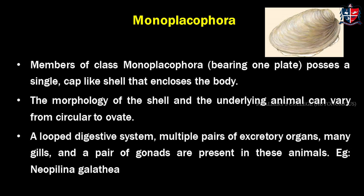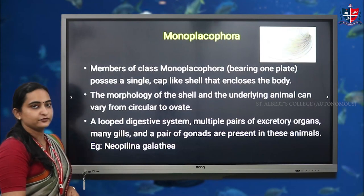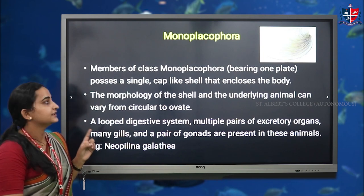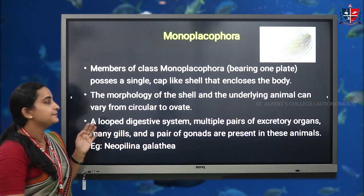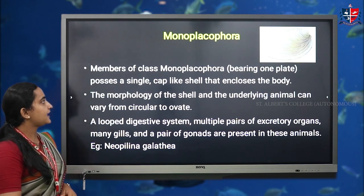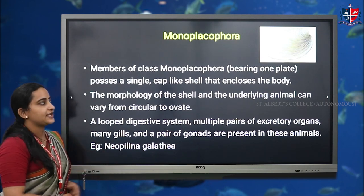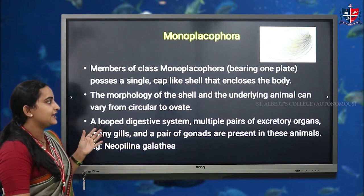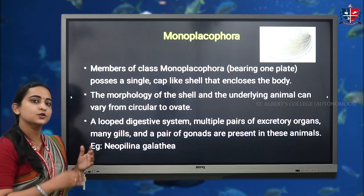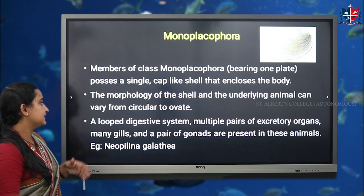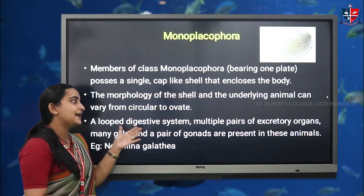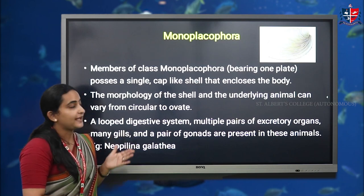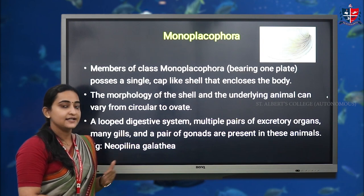The next class is Monoplacophora. 'Mono' means one or single, so all members of this class bear one single shell or plate on their body. Members of class Monoplacophora possess a single cap-like shell that encloses their body. The morphology of the shell and the underlying animal can vary from circular to oval shape, and a looped digestive system is present. Multiple pairs of excretory organs are present — five pairs of nephridia for excretory purposes.